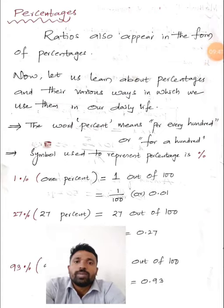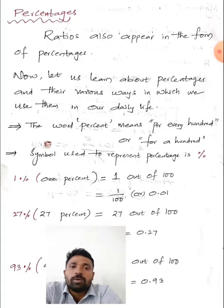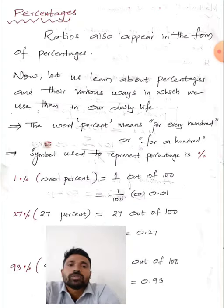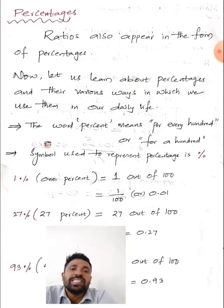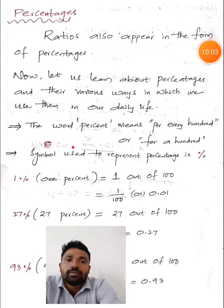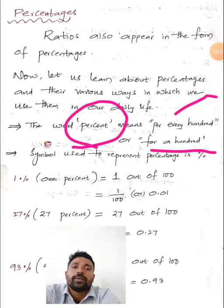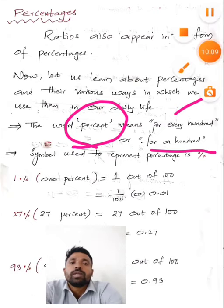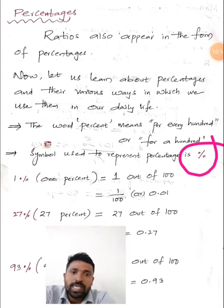Now one more important topic: percentages. Ratios also appear in the form of percentages sometimes. We generally use percentages to compare terms easily. The word 'percent' means per every hundred, and we use the symbol '%' for percentages.